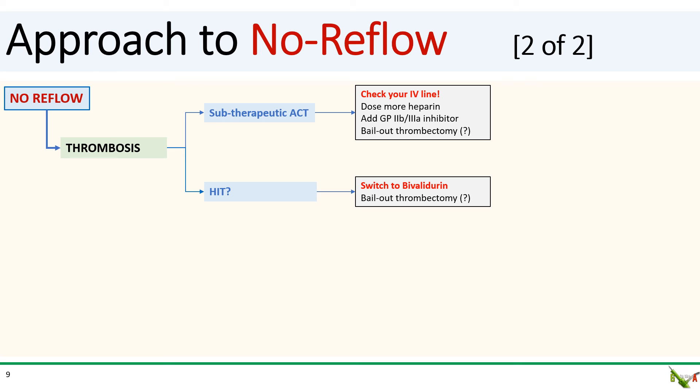For possible HIT, you'll obviously need to stop the heparin and switch to bivalirudin. This may also be the one scenario where bailout aspiration thrombectomy could be useful.